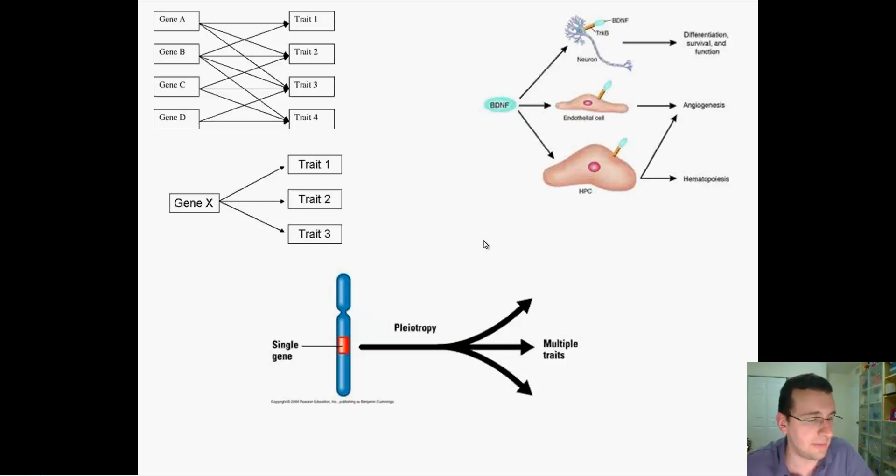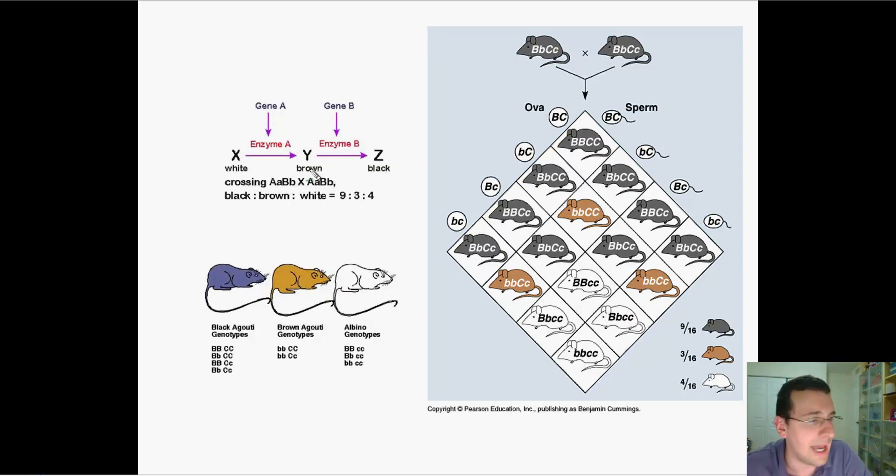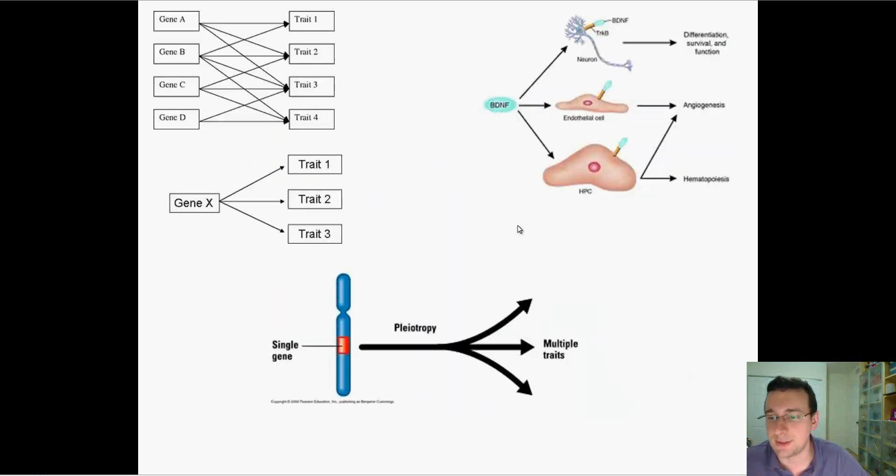And so the same thing with epistasis. Even if they have gene Y is the same, that does not mean they are going to be the same because what if X is different? So one gene can depend on another or do multiple jobs in the cell.